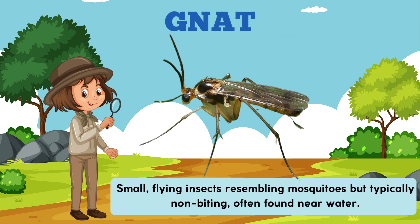Gnat. Small, flying insects resembling mosquitoes, but typically non-biting, often found near water.